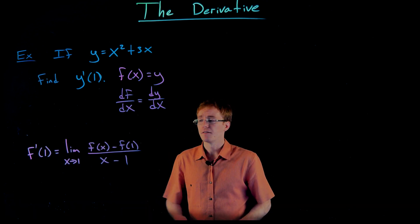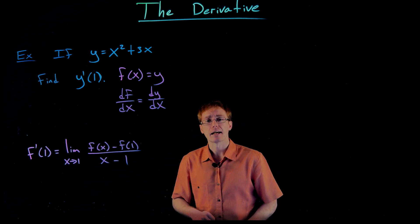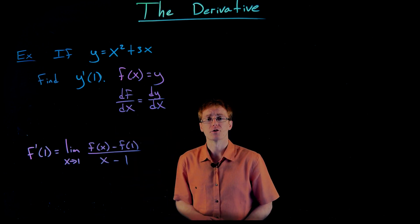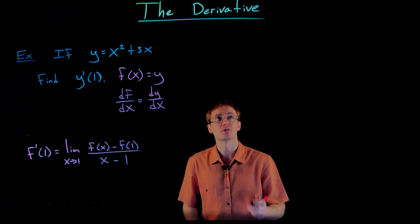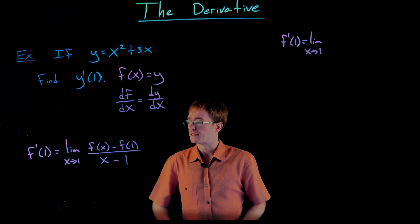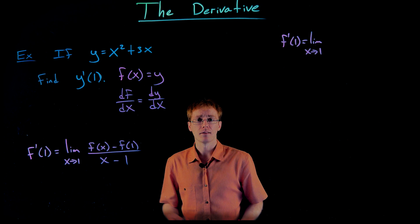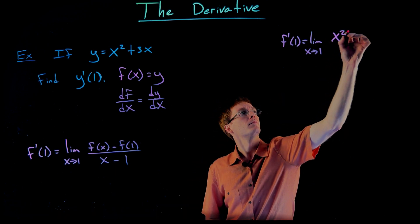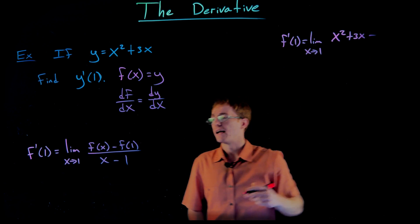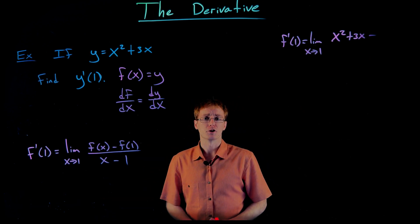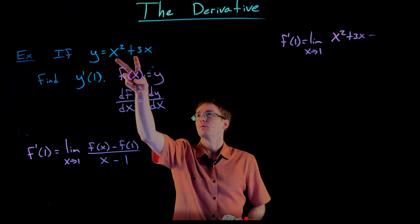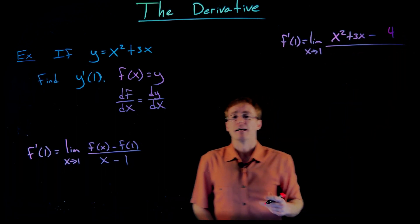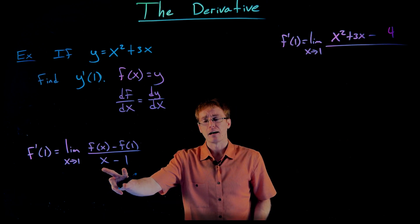So if we want to find the derivative of y or f at one, we have to take the limit as x approaches one of that difference quotient: f of x minus f of one, the change in y, divided by x minus one, the change in x. So to find f prime of one, we take the limit as x approaches one of f of x minus f of one in our numerator. What is f of x? That's just our function: x squared plus three x. And then we subtract f of one — the value of our function when the input is one — which gives us four. And we divide by x minus one.